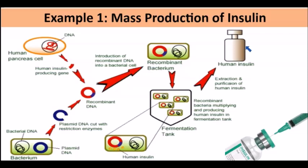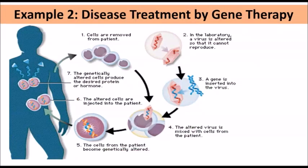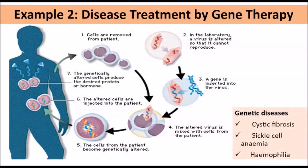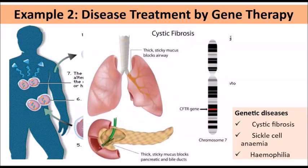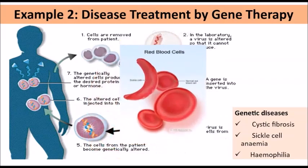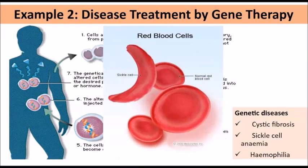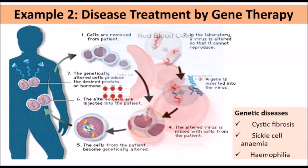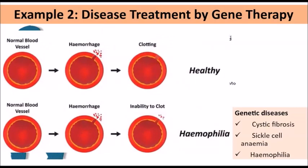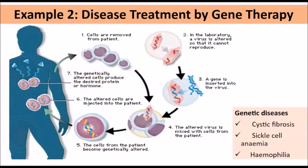This is just one key example of genetic engineering in the commercial production of medicine. The next example is disease treatment by gene therapy, which is very valuable for treating hereditary diseases such as cystic fibrosis, sickle cell anemia, and hemophilia. Cystic fibrosis involves a buildup of mucus affecting the lungs and digestive system; sickle cell anemia involves red blood cells being sickle-shaped rather than biconcave; and with hemophilia, there is a problem with blood clotting. These are three genetic diseases that can certainly benefit from gene therapy.